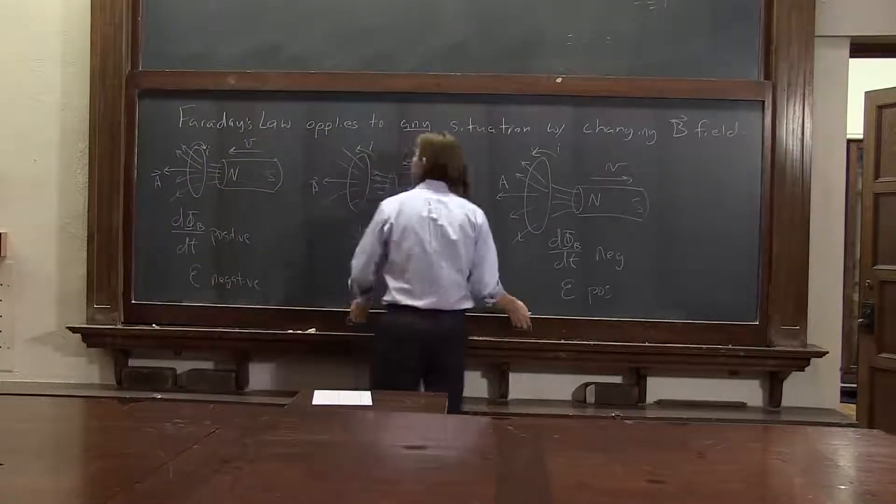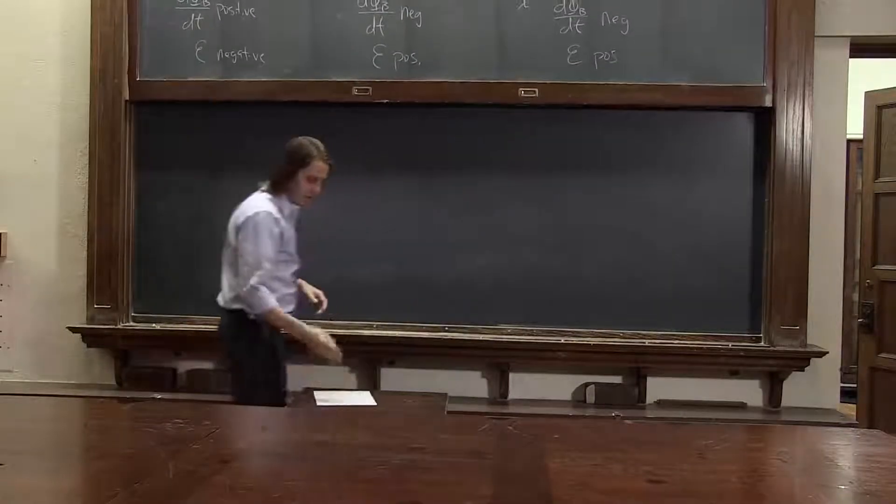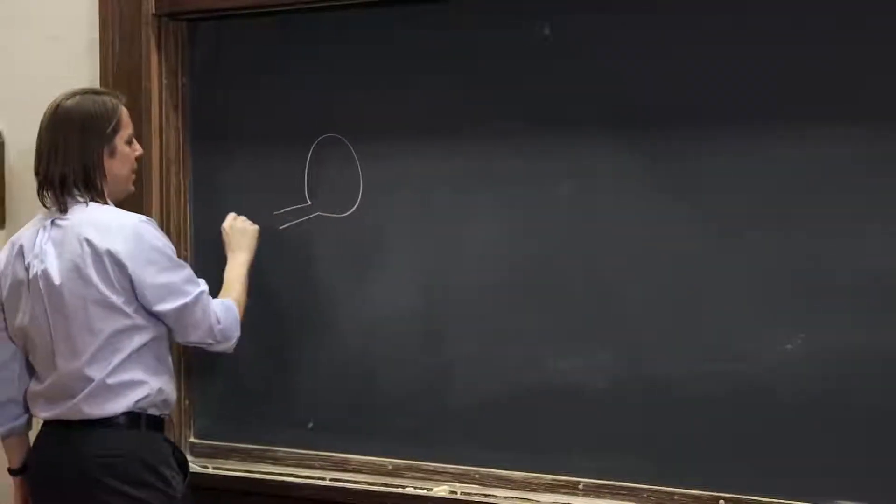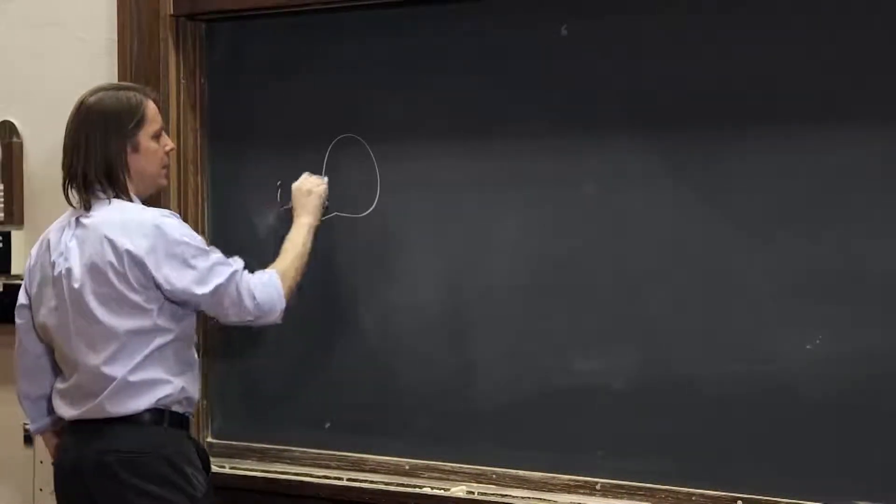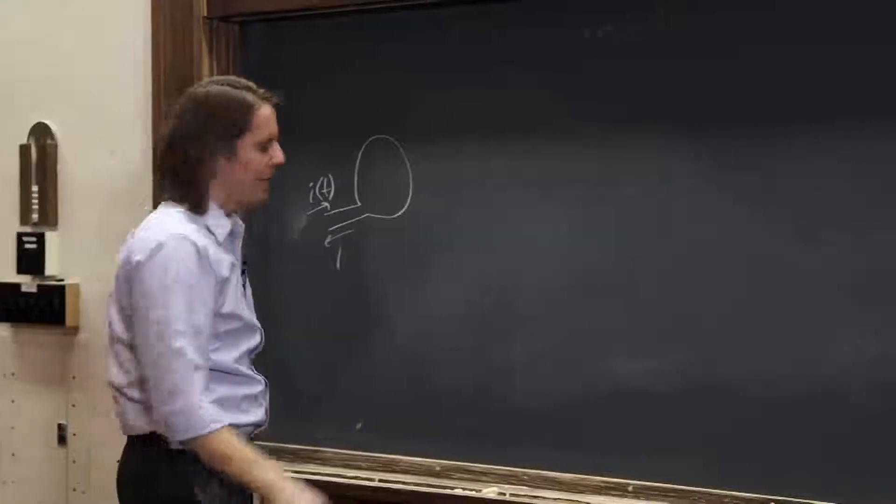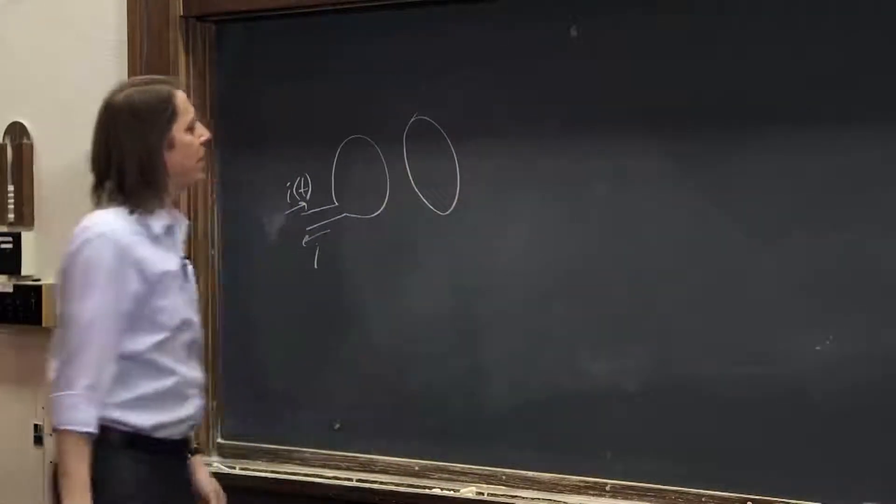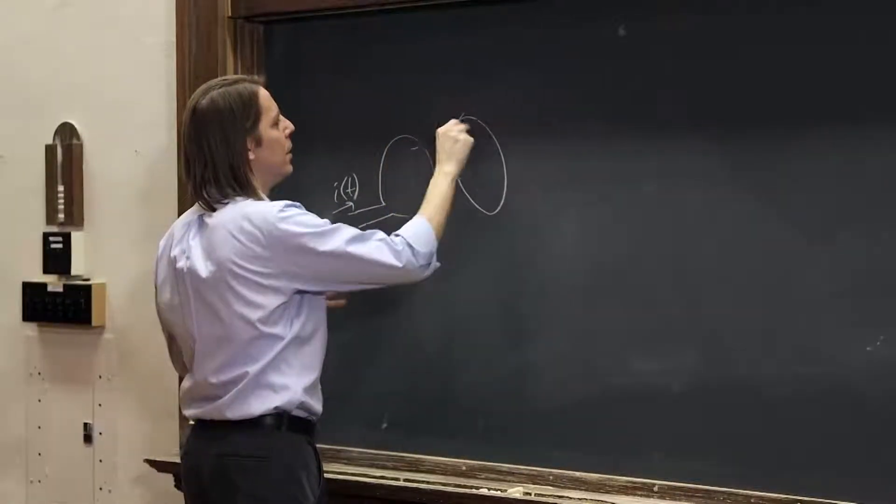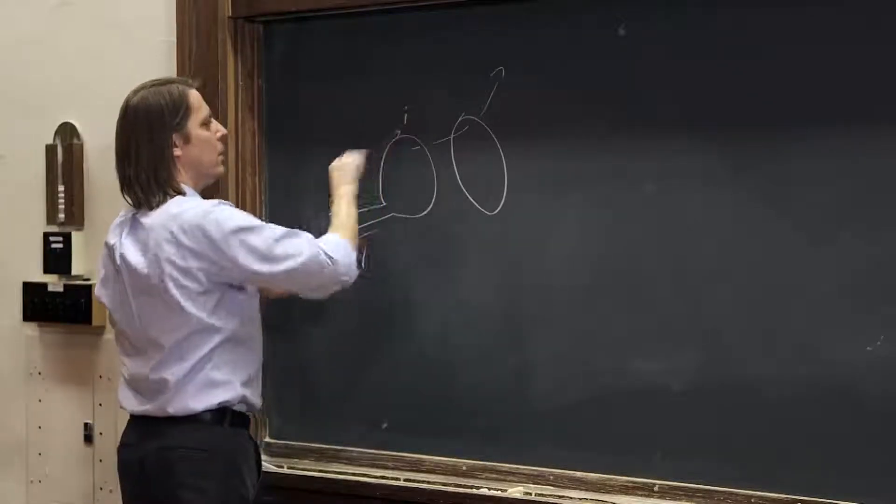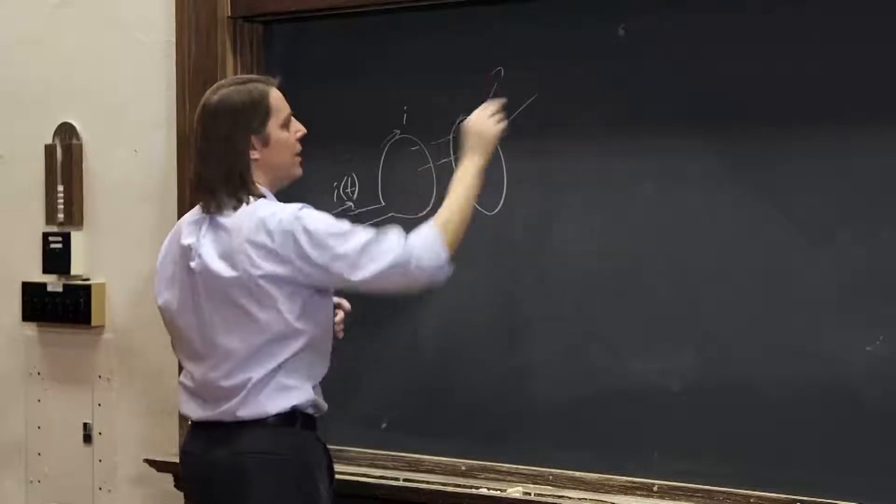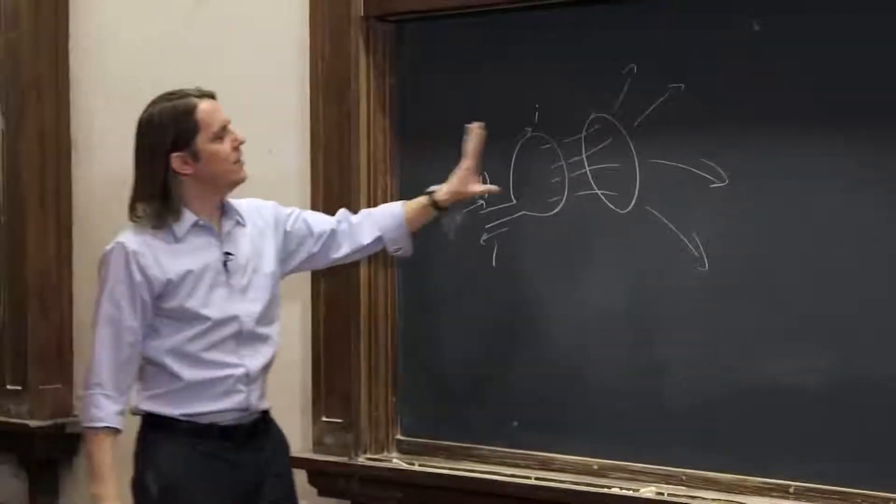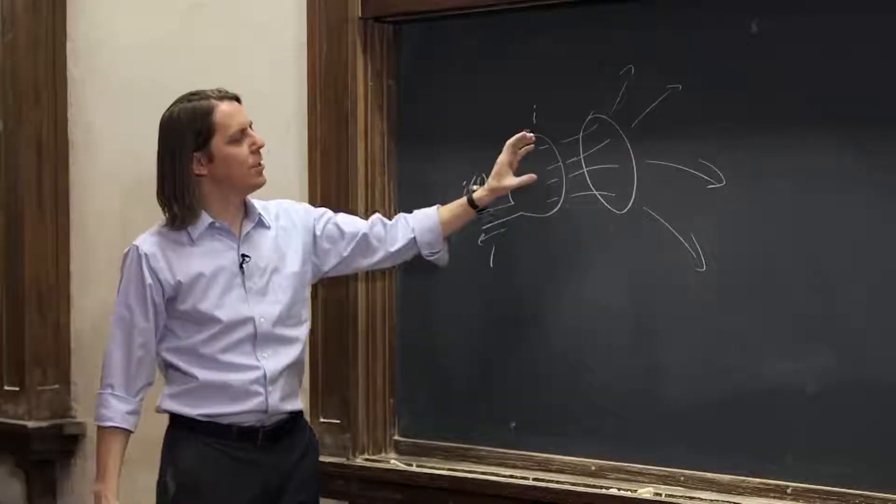This is not the only way to induce an EMF. We can draw many other interesting situations. We could have a current loop here. Let's put this thing, send some current in here and out here, and let's make that current vary in time, some time-varying current. Then we could put our loop, our other loop, nearby. So we know what this thing is going to do. This loop is going to make a B field. If the current goes around like this, then it's going to have a B field pointing out like that, and it's going to go like that.